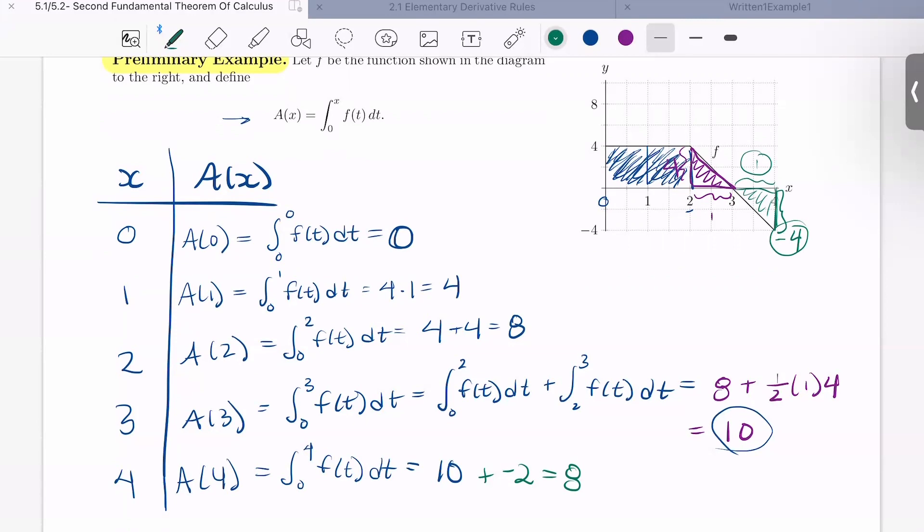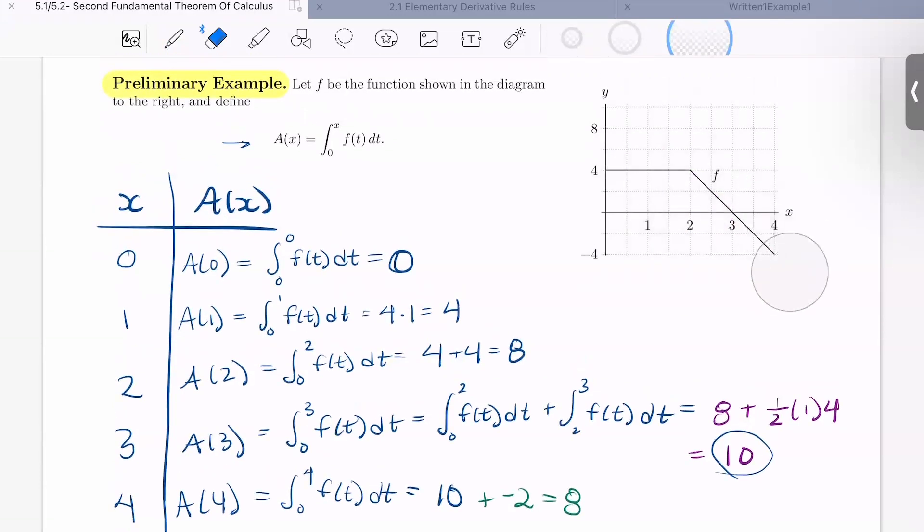And now that we have this table of values, what I'd like us to do is plot these values of the function on the set of axes that we already have set up here. So let's go ahead and do that. I'll use blue for a of x. So at 0, at x is 0, my a of x function is 0. So I'm going to plot this point here. At 1, x equals 1, my a of x function is 4. So I'll plot the point 1, 4. At 2, x equals 2, my a of x function is 8. So at 2, I'll go up to 8. So along this part, it looks pretty linear.